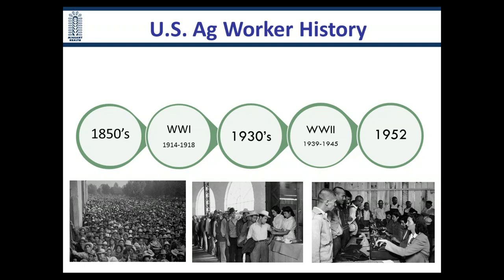During World War II, there was again a labor shortage. To meet that shortage, Congress passed the Bracero Act, which authorized temporary visas to Mexican citizens. It was an important time — there were a lot of temporary visas authorized, and workers went through a lengthy process as part of the program. The pictures shown here were taken during this time and show workers in line getting vaccinated as part of the authorization process to work in the U.S. agricultural industry. The Bracero Act ended in 1947.